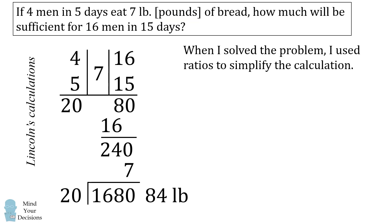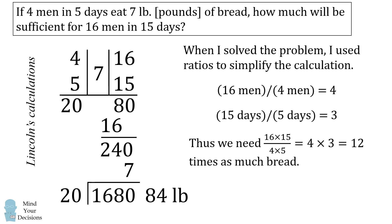So when I solve the problem, I use ratios to simplify the calculation to reduce the chance of making an error. I first compared the number of men that we need to solve for versus the number of men we know. So 16 men divided by 4 men is 4 times as many men. Similarly, 15 days divided by 5 days is 3 times as many days. So in order to compute the ratio of the man days, we take 16 by 15 divided by the quantity 4 times 5. And this simplifies by these two ratios to be 4 times 3. Therefore we need 12 times as much bread.